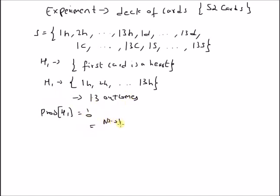That is, number of possible outcomes in event H1 and the total number of outcomes in the sample space, that is number of outcomes in sample space S.